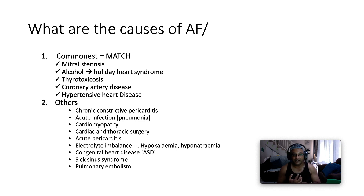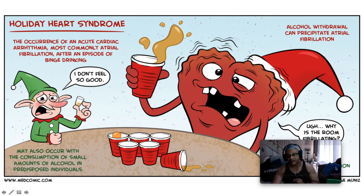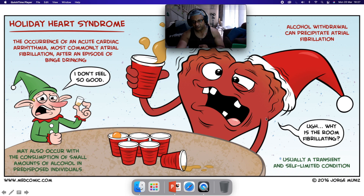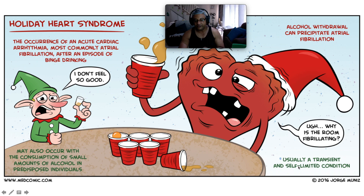Other causes include chronic constrictive pericarditis, acute infection such as pneumonia especially in the elderly, cardiomyopathy, cardiac and thoracic surgery, acute pericarditis, electrolyte imbalance such as hypokalemia and hyponatremia, congenital heart disease especially ASD (atrial septal defect), sick sinus syndrome, and pulmonary emboli. A lovely cartoon illustrates the holiday heart syndrome — the occurrence of an acute cardiac arrhythmia, most commonly atrial fibrillation, after an episode of binge drinking. Alcohol withdrawal can also precipitate atrial fibrillation, and it can occur with small amounts of alcohol in predisposed persons, usually transient and self-limited.